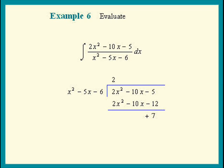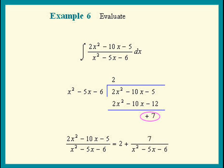Now we write the given fraction as the quotient 2 plus the remainder 7 divided by the divisor, x squared minus 5x minus 6.